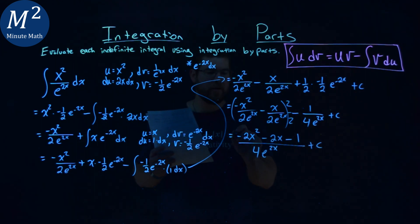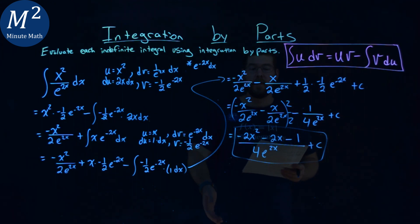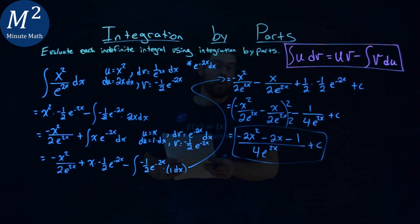Make sure we're good, all good. And so my final answer here is negative 2x squared minus 2x minus 1 over 4 e to the 2x power plus c.